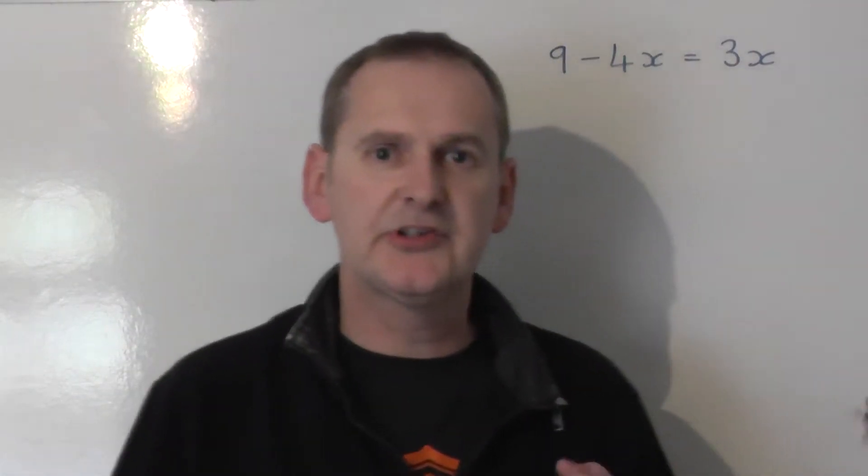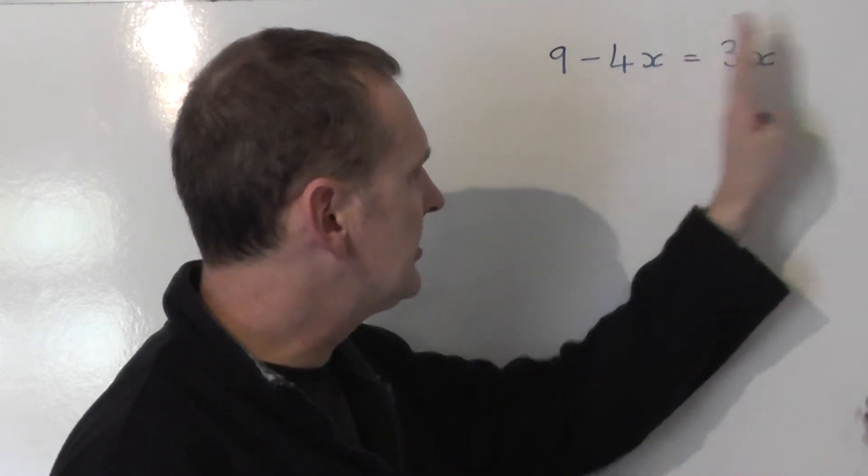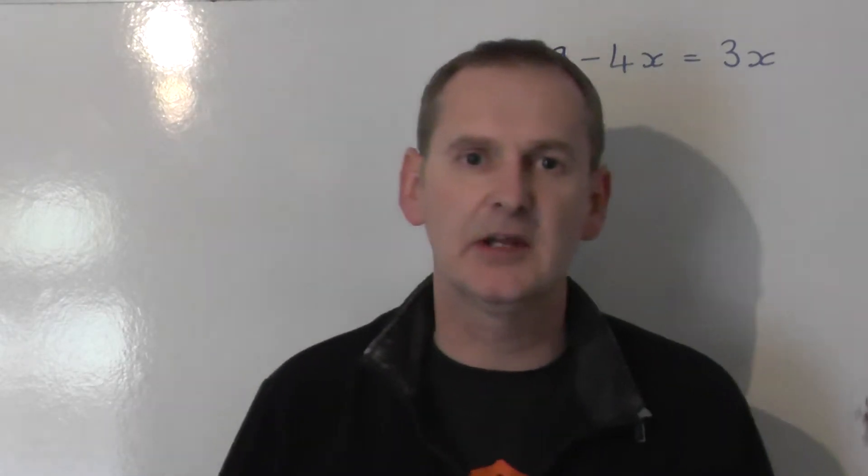Looking at this equation, you can see that we've got x's on both sides of the equal sign. We've got 3x on the right-hand side, and minus 4x on the left-hand side.